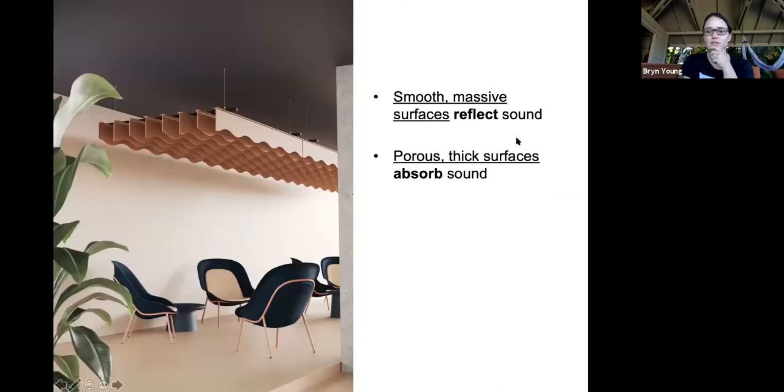Smooth, massive surfaces reflect sound and porous, thick surfaces absorb sound. I just talked about that essentially. If it's porous, there's more space for the sound to go into and kind of get captured. If it's smooth and it's massive, the sound will just bounce right off of it and go back into the other space.